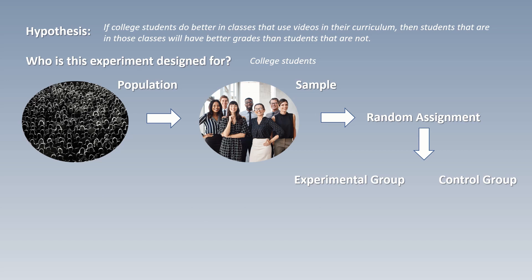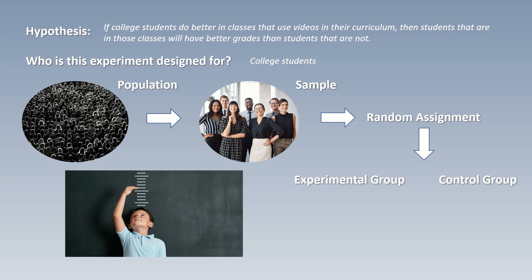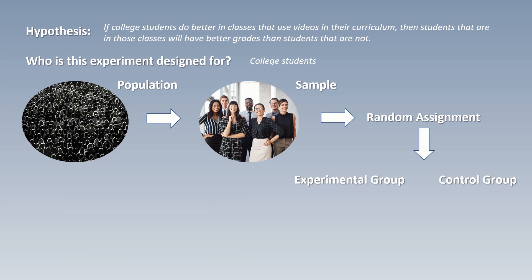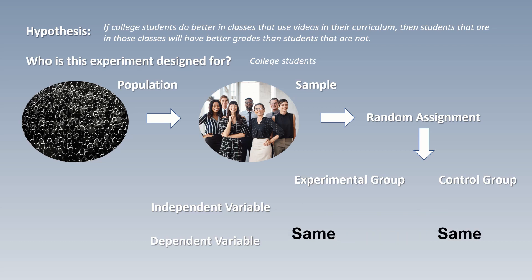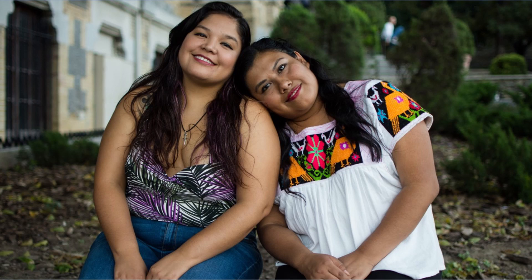In any experiment, there are always going to be at least two variables being studied. A variable is anything that can be measured. In experiments, we have specific terms for these: the independent variable and the dependent variable. The independent variable is the thing we're trying to see if it is effective or not. The dependent variable is what we use to measure the independent variable. Another good way to distinguish them is that the dependent variable is always going to be exactly the same for both the control group and the experimental group — the independent variable will be different. The way I remember this is that the dependent variable is very dependable: it's always there.